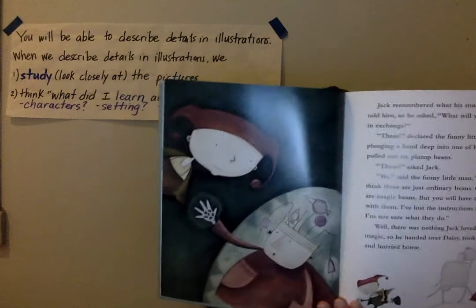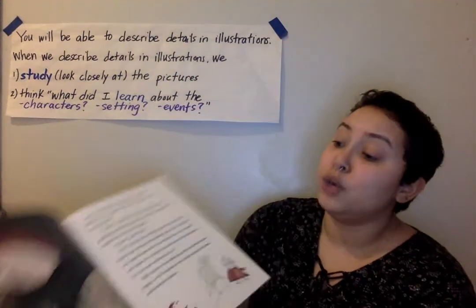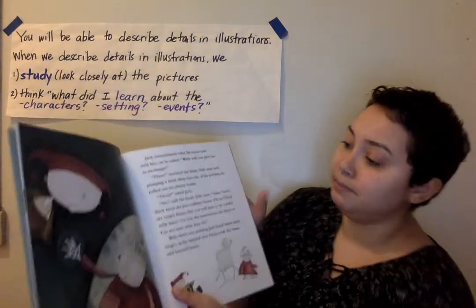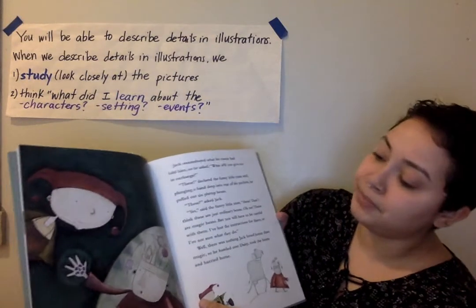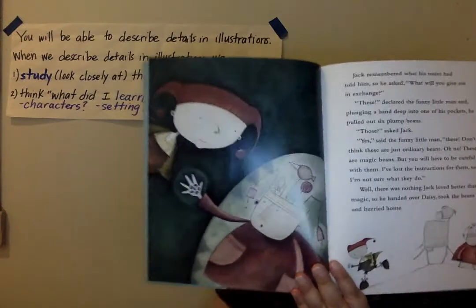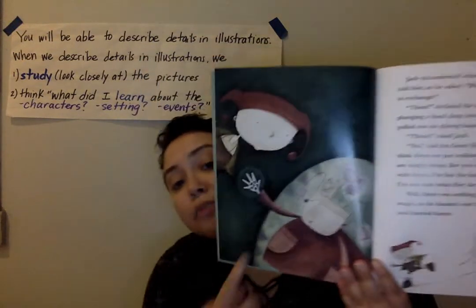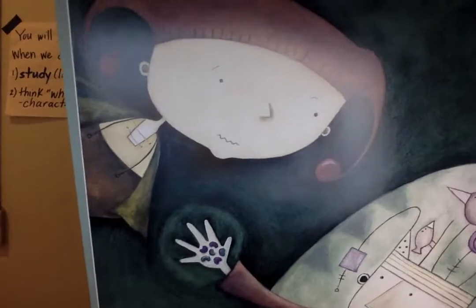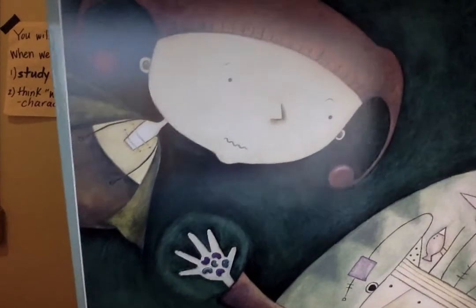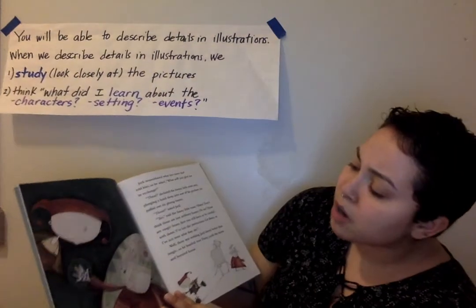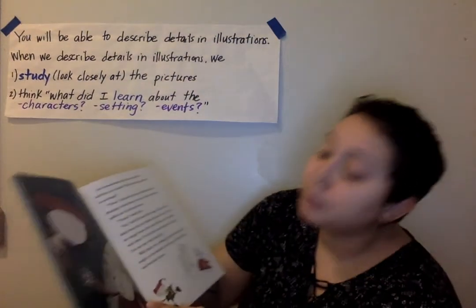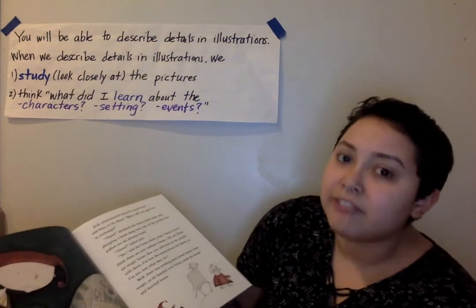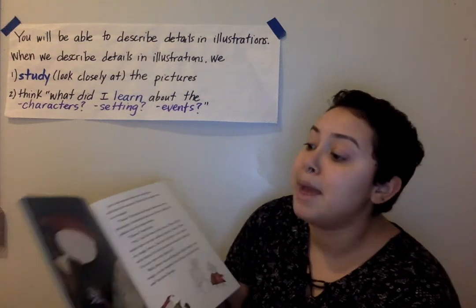Now I'm going to look closely at this page — this is the page where the older man traded the cow and the beans with Jack. I see by looking closely at the illustration that the man has the beans in his hand. If you can see closely, I notice that the beans are different colors — not all beans are the same. I see some blue beans, one with spots on it, I see purple beans. I wonder if that has anything to do with the fact that they might be magic.